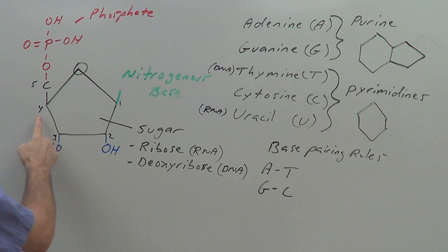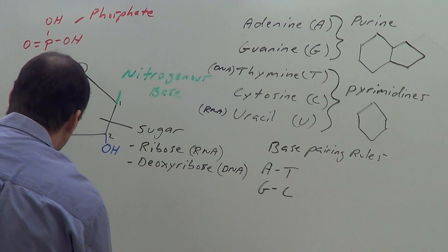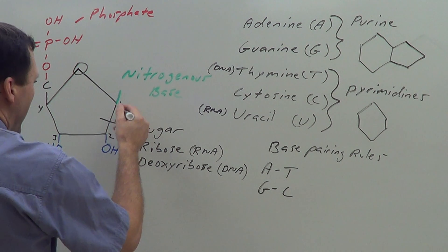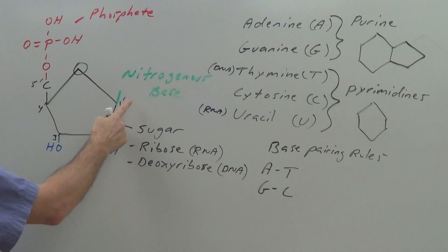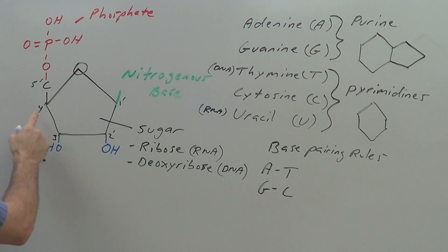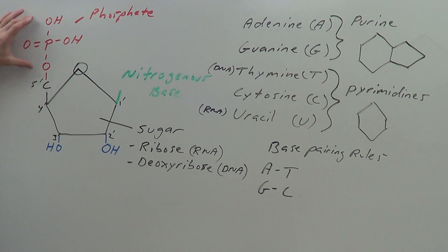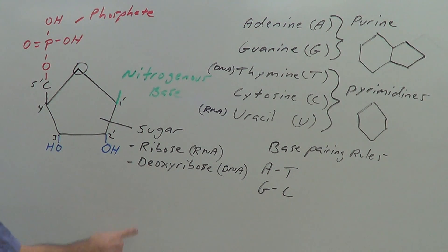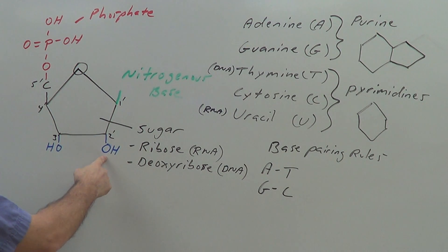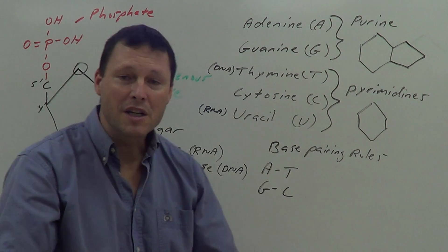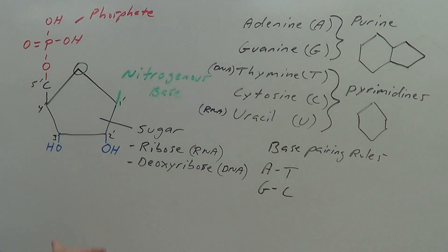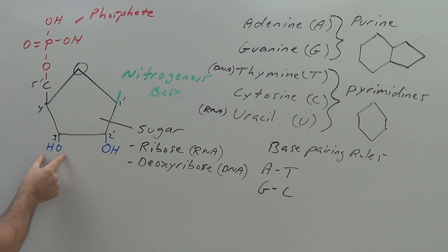Let's look at the carbon numbering system one more time: one, two, three, four, five — that's how the carbons are numbered on the sugar, and we add a prime symbol to each number: one prime, two prime, three prime, four prime, five prime. The phosphate is always attached to the five prime carbon, and whether the oxygen is present or absent at the two prime position determines whether the sugar is ribose or deoxyribose.